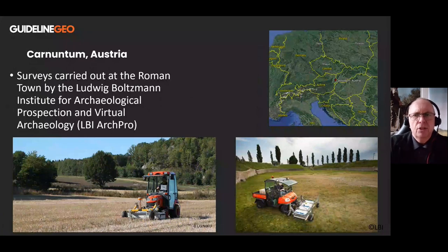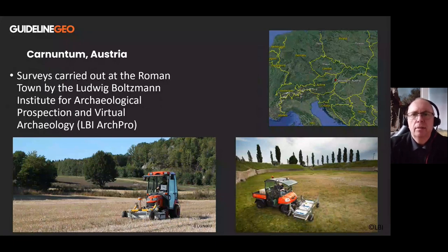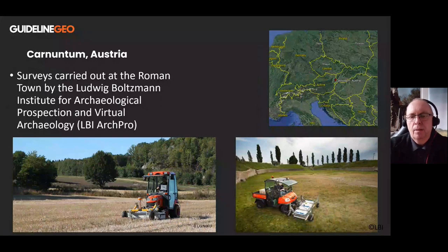Some of the early data collection that the Mira was involved in: here's one example. This is the Carnuntum Roman gladiator site in the east of Austria, very close to the border, just near Vienna. It was the Ludwig Boltzmann Institute that started to undertake a large archaeological prospection of the area of Carnuntum.